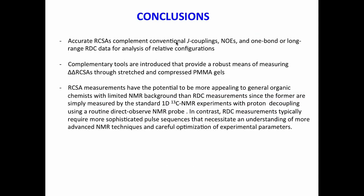The conclusions are these ones. I think that I'm using almost 40 minutes, but accurate RCSAs complement conventional J-couplings, NOE, one-bond, or long-range RDCs data for analysis of relative configuration. Complementary tools are introduced that provide robust means of measuring delta of delta RCSA through stretched and compressed PMMA gels. The group of Merck is using polyhema gels that are compatible with DMSO. Just keep in mind that in industry, DMSO is mostly used, and also we have DMSO gels for the compression device. RCSAs measurements have the potential to be more appealing to general organic chemists with limited NMR background than RDCs measurements, since the former are simply measured by the standard 1D carbon-13 experiment with proton decoupling using a routine direct-detect NMR probe.